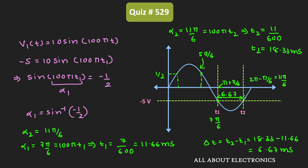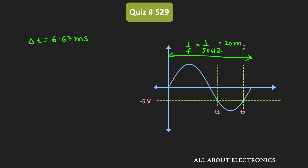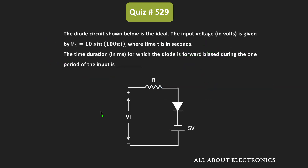For the rest of the time the diode will remain in the forward bias condition. We know that delta T equals 6.67 milliseconds, and the time period T equals 1 divided by 50 Hz, which is equal to 20 milliseconds. So the on duration of this diode equals T minus delta T, that is 20 milliseconds minus 6.67 milliseconds, which is roughly equal to 13.33 milliseconds. That means during one period of the input signal, the diode remains in the forward bias condition for 13.33 milliseconds.